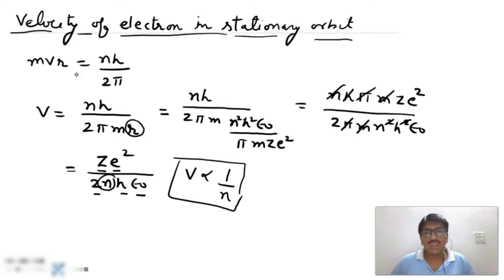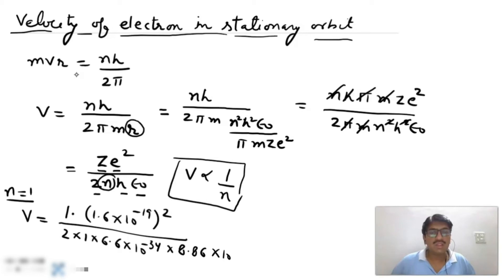We can also calculate the velocity of electron. For hydrogen-like atom n becomes equal to 1, Z is 1. So 1.6 × 10⁻¹⁹ whole square upon 2 × 1 × 6.6 × 10⁻³⁴ and ε₀ is 8.86 × 10⁻¹². And after solving, this value becomes 2.19 × 10⁶ meter per second.